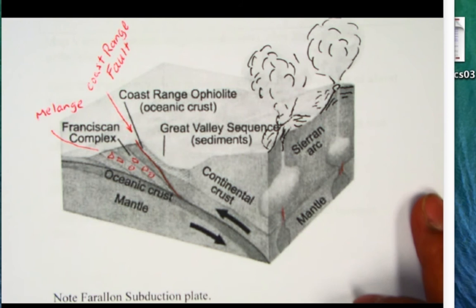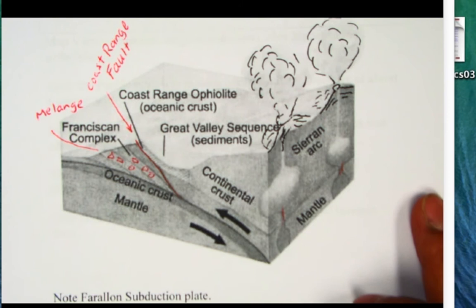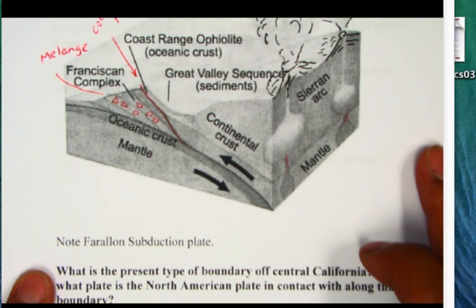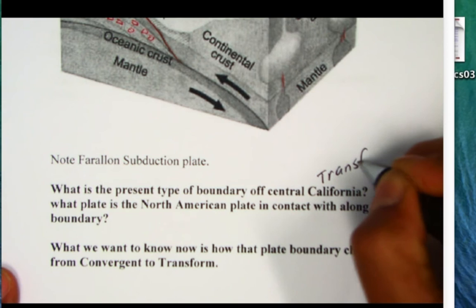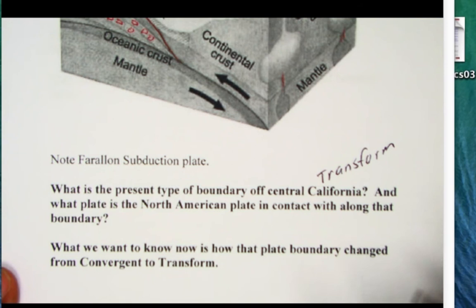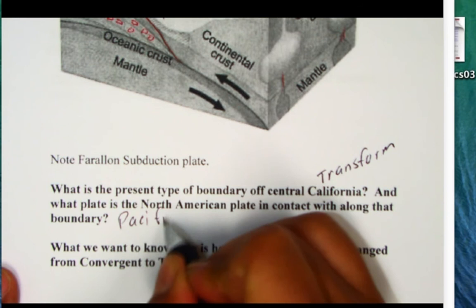Now during Mesozoic time note that we have subduction, there's a Farallon subduction. If we think about today what is the present boundary off of central California, well today it's a transform margin, transform, and that's the San Andreas Fault and the North American plate is in contact with the Pacific plate.